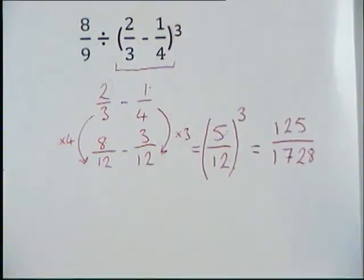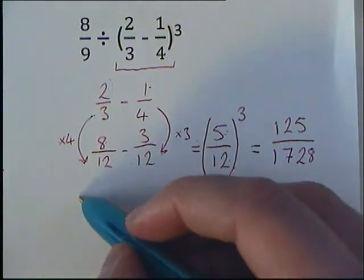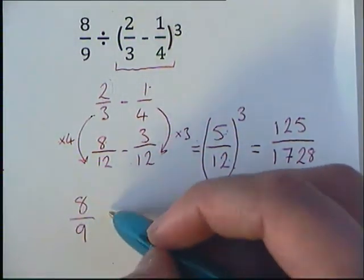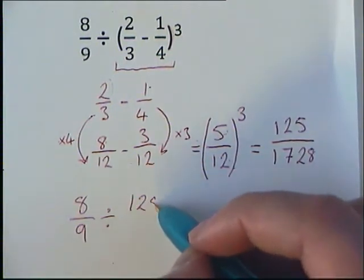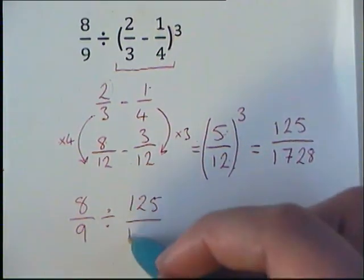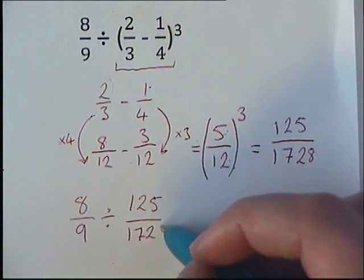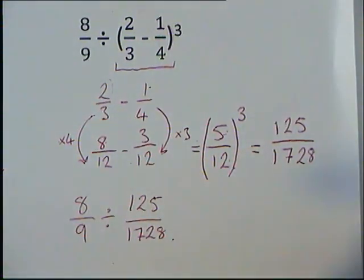Again not quite the end because we've still got to deal with our fraction which was right at the beginning. So we've now got 8/9 divided by 125/1,728. So we're going to use our KFC.